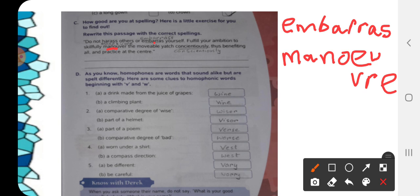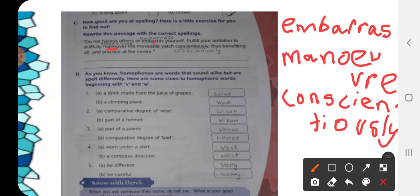The movable yacht. Now we are going to correct the spelling of conscientiously. Out here is given C-O-N-C-I-E-N-T-I-O-U-S-L-Y. The correct spelling as we are going to write will be C-O-N-S-C-I-E-N-T-I-O-U-S-L-Y. This is the correct spelling for conscientiously.